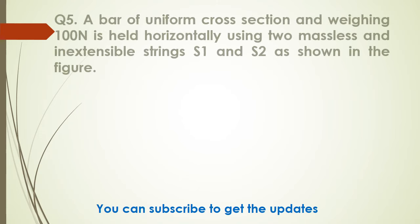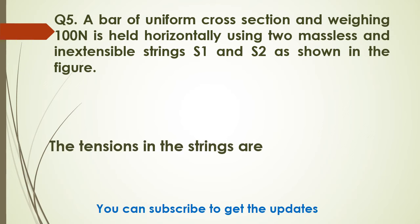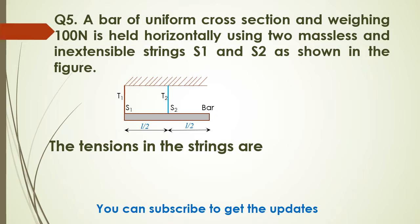Let me read out the question. A bar of uniform cross-section weighing 100 Newtons is held horizontally using two massless and inextensible strings S1 and S2 as shown in the figure, and the tensions in the strings are to be found. As per our strategy, what they are asking for is the tensions in the strings, and what they have given is a uniform cross-section of length L weighing 100 Newtons.